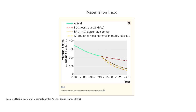The current rate of decline, however, will not be sufficient for us to achieve the goal of 70 maternal deaths per 100,000 live births. At the current rate of progress, we would be at 164 per 100,000 live births and not 70 or less as enshrined in the SDG goals. Therefore, as a world we will fall short of the SDG target in relation to maternal mortality unless we make special efforts.